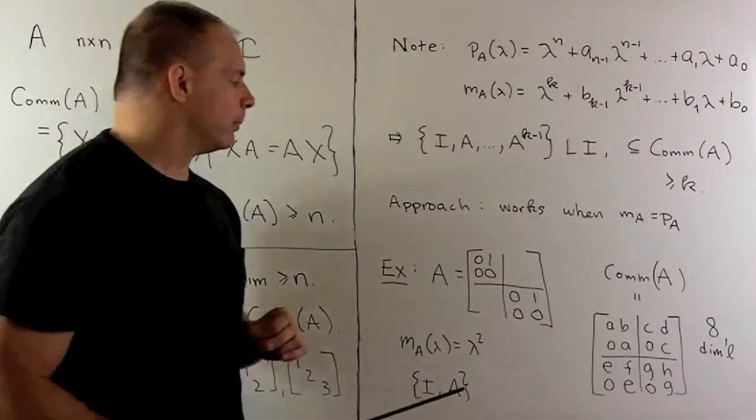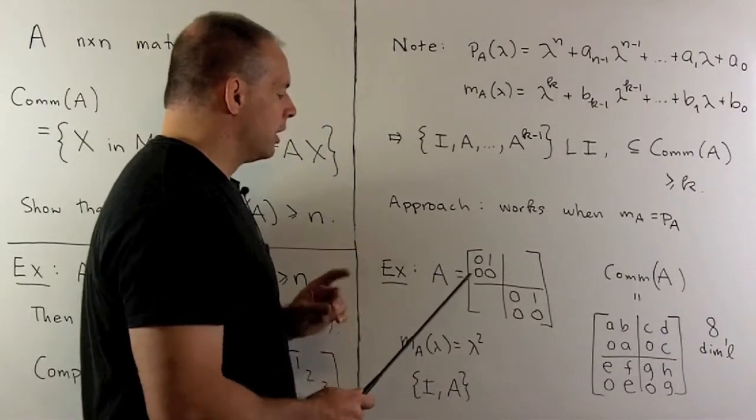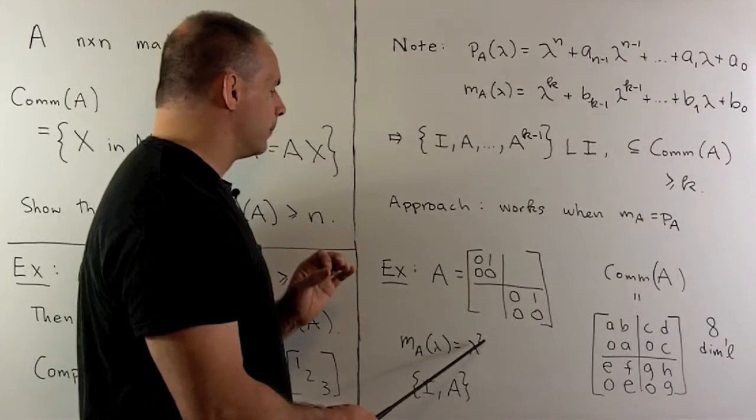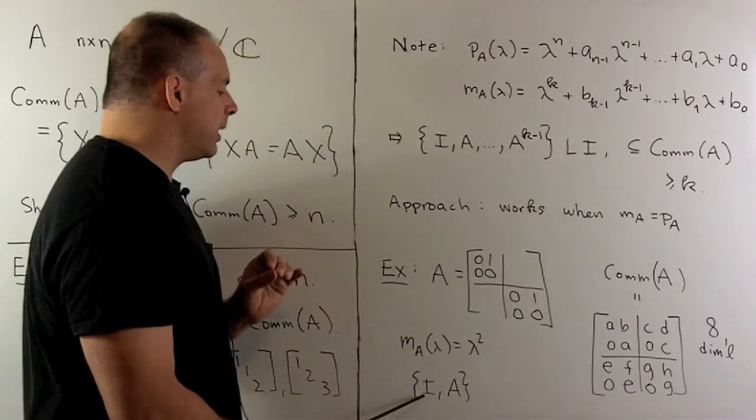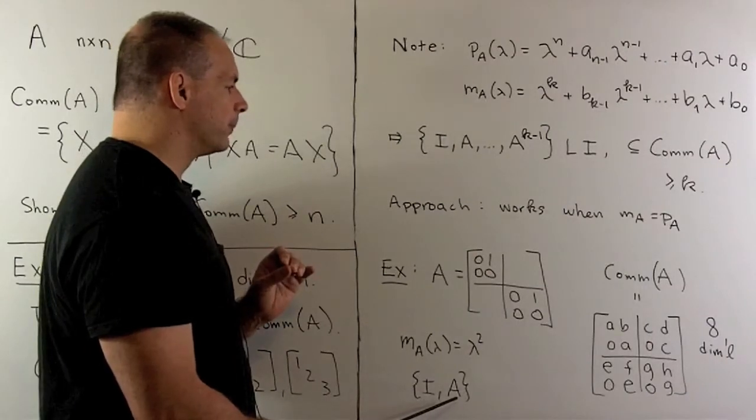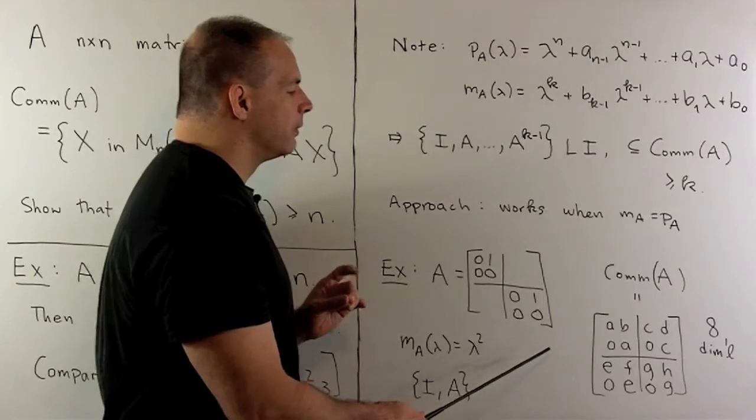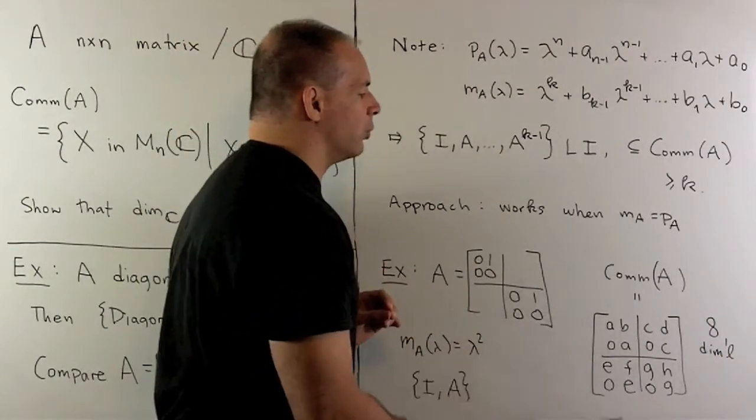For a non-trivial example, let's let A be equal to this matrix here. The minimal polynomial of our A is going to be equal to lambda squared. So if we try to form the set, we're only going to get the identity matrix and A itself. If I work out the commutant of A by hand, we're going to get the set of all matrices in this form. So our commutant will be eight-dimensional.